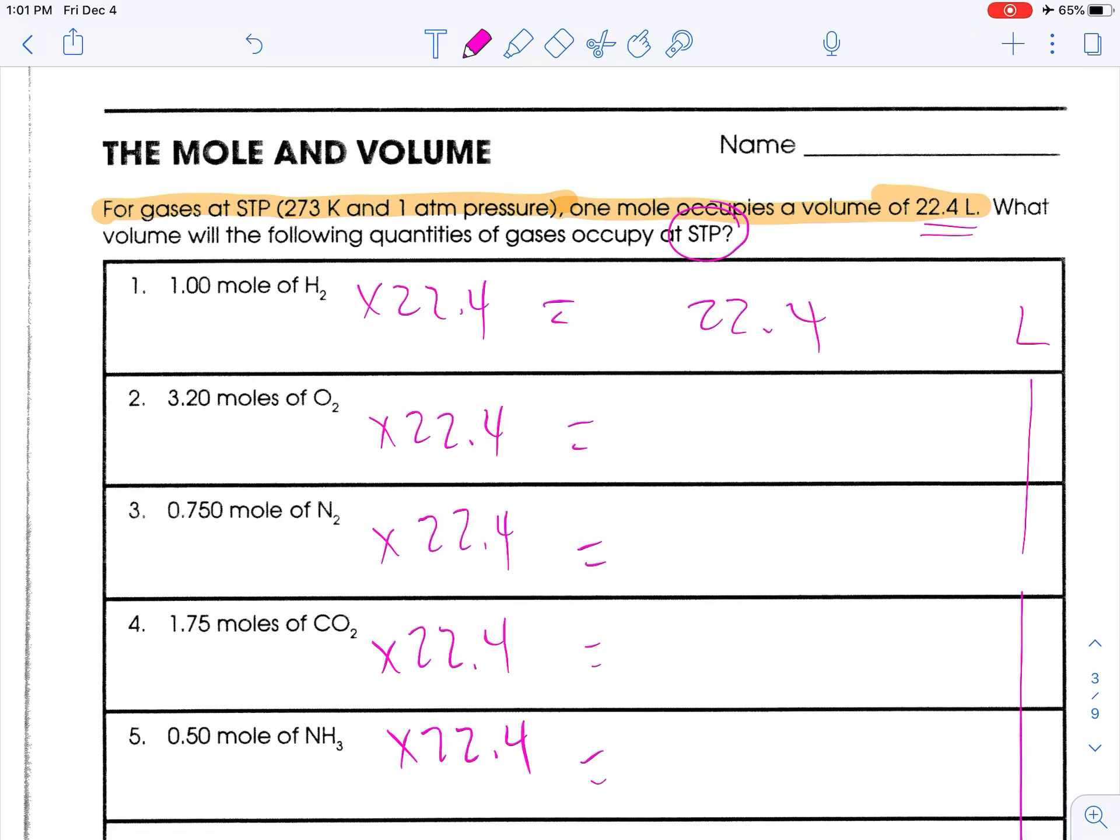3.20 times 22.4. So, the calculator gives me 71.68. However, if I needed my three sig figs, that would round up to 71.7, liters. Okay.